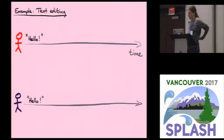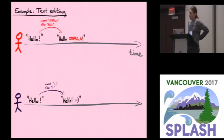Let's have a concrete example. I gave Google Docs as an example, so let's take a text document. In this case, the red user and the purple user each have a copy of the same document that contains the text hello. The red user inserts the text oops before the exclamation mark. So now it reads hello oops exclamation mark.